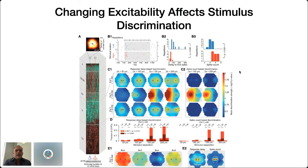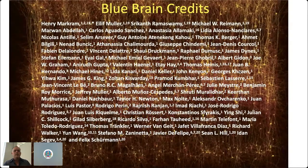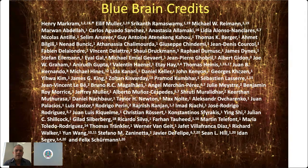Changing the excitability actually affects the ability to discriminate different stimuli and different size stimuli. This very precise balance of excitation and inhibition really determines the degree to which you can precisely discriminate different stimuli. Maintaining that balance is really key to the very precise ability to discriminate different types of input. The Blue Brain Project paper had 82 co-authors — a very large team effort with absolutely tremendous contributions across a broad group of collaborators.